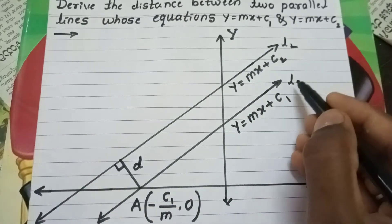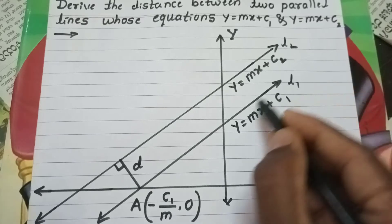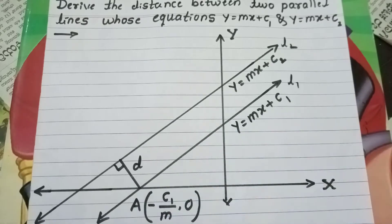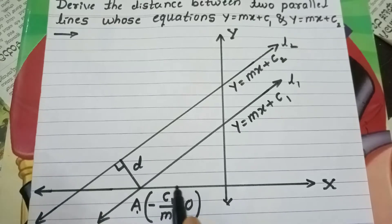Line L1 crosses the x-axis at point A, which is the point (-c1/m, 0). That is the point we will use.